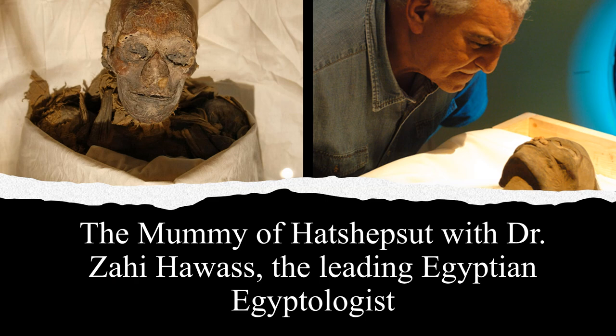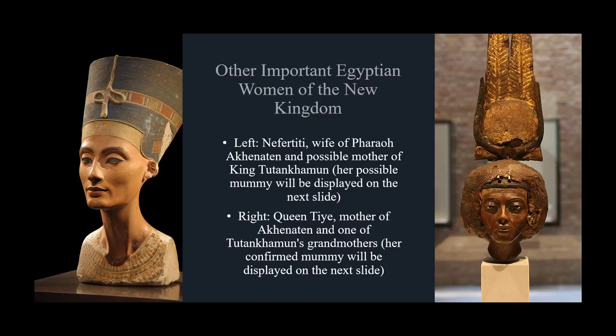This is an image of the mummy thought to be Hatshepsut, with Dr. Zahi Hawass, a leading Egyptologist, looking on. Dr. Hawass was one of the main proponents of this mummy belonging to Hatshepsut, but other archaeologists disagree. Other important women who were rulers in ancient Egypt include Nefertiti, wife of Pharaoh Akhenaten and a possible mother of King Tutankhamun. This famous bust of Nefertiti shows her wearing the war crown of the pharaoh, suggesting she may have briefly ruled as pharaoh. On the right is Queen Ti, the mother of Akhenaten and one of King Tut's grandmothers. Her mummy, which has been confirmed, will also be displayed.